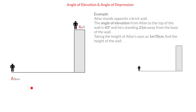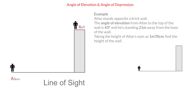In this illustration, we can see that we have two people, Alan and Bill. Alan is standing at ground level, whilst Bill is standing at the top of this wall. To define the angle of elevation as well as the angle of depression, the first thing we need to define is the line of sight.